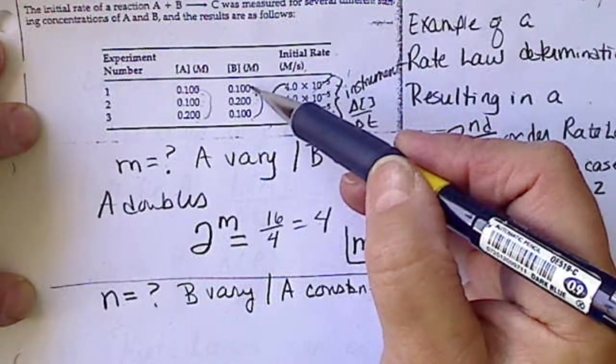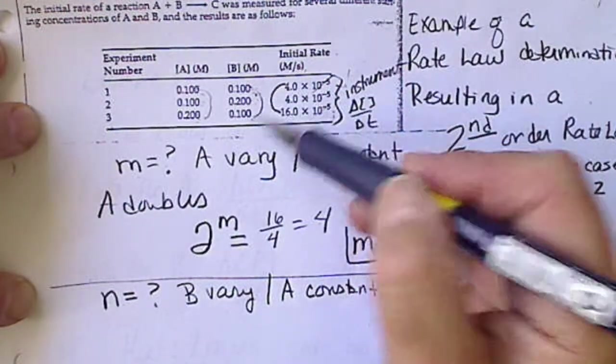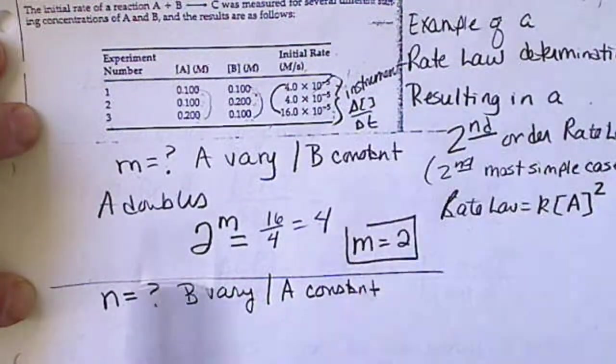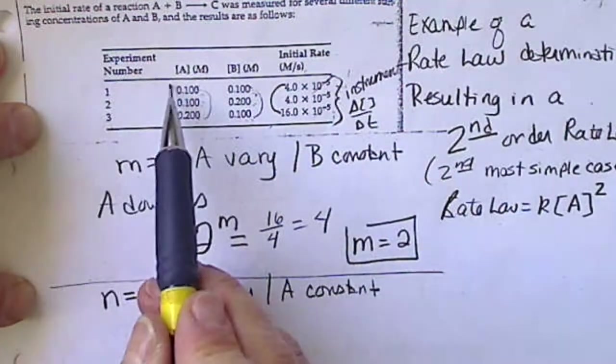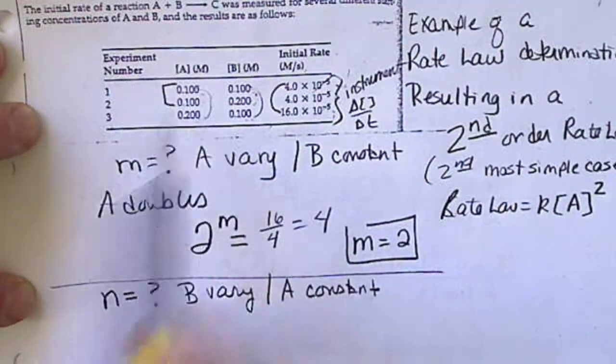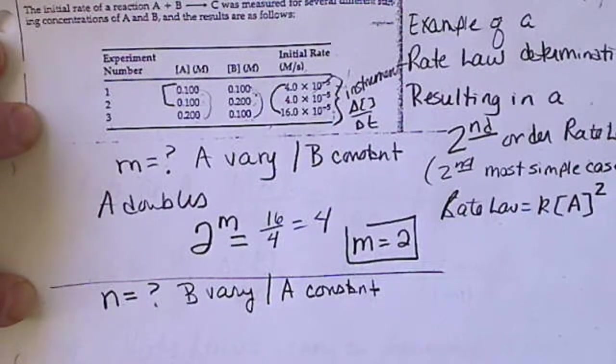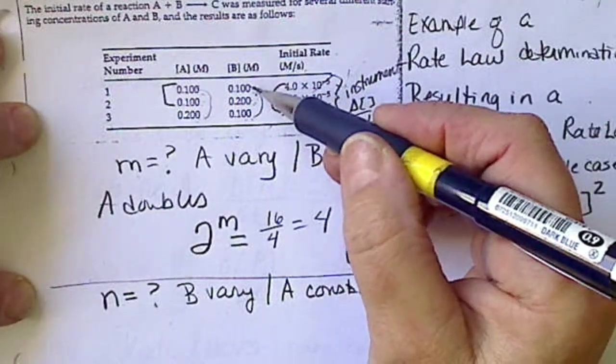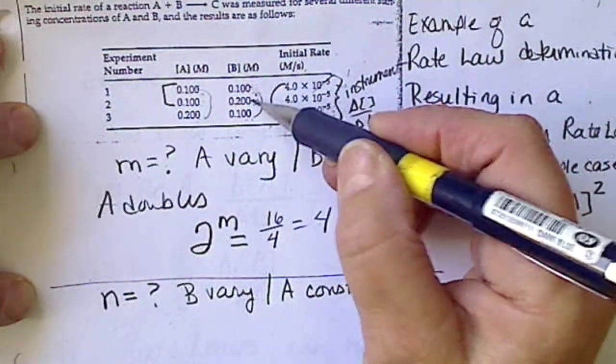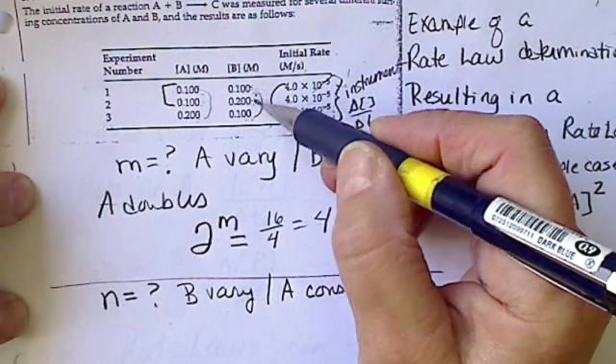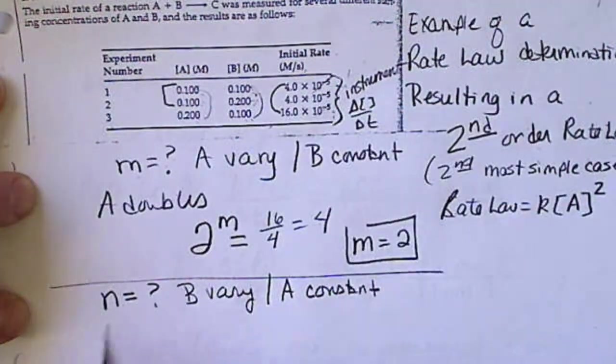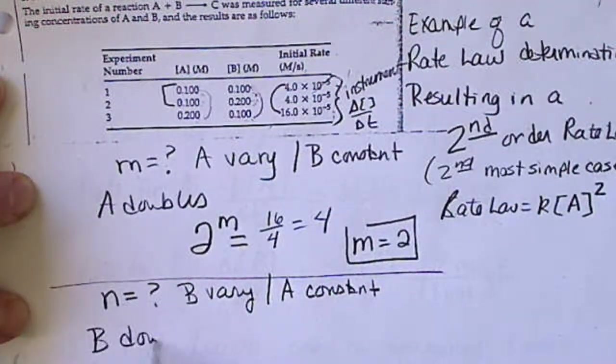So, we have to choose, are we going to use experiment 1 and 2 or 3 and 2? If we look over at A, A stays the same between experiment 1 and 2. So, I'm going to look at B and B doubles. So, going from point 1 to point 2, B doubles.